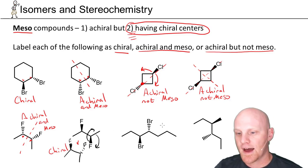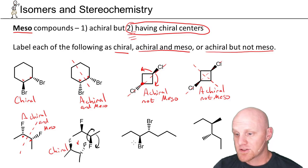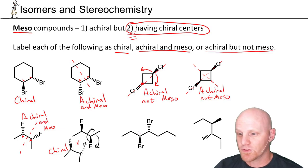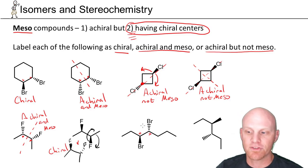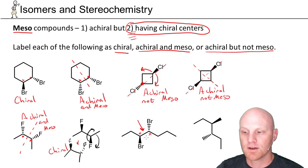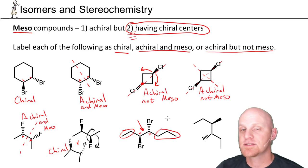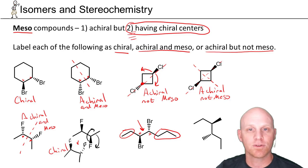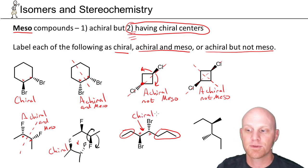Moving to the last two examples: here I've got two chiral centers. It's not in a rotational conformation that makes it easy to see symmetry, but you might realize there's no way there's a plane of symmetry right between these two chiral carbons — there are two carbons on the left and three on the right. This is not even a symmetrical molecule. Having chiral centers and no chance for symmetry, this is simply chiral.